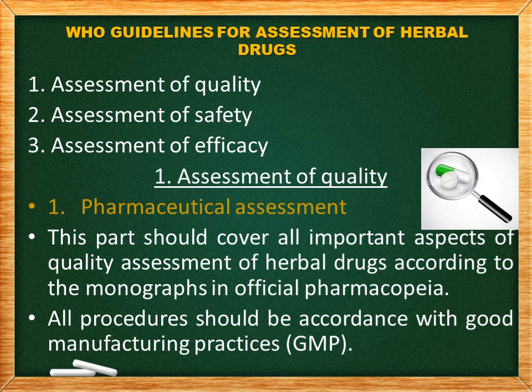The WHO guidelines involve the following categories: assessment of quality, assessment of safety, and assessment of efficacy. Under assessment of quality, the first part is the pharmaceutical assessment. This part should cover all the important aspects of quality assessment of herbal drugs according to the monographs in the official pharmacopoeia, and all procedures should be in accordance with the Good Manufacturing Practices — the GMP guidelines.